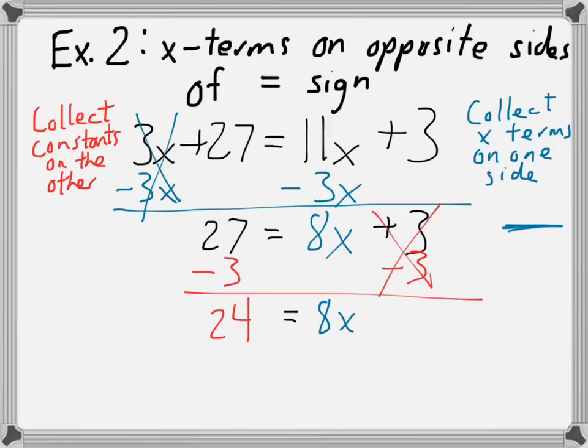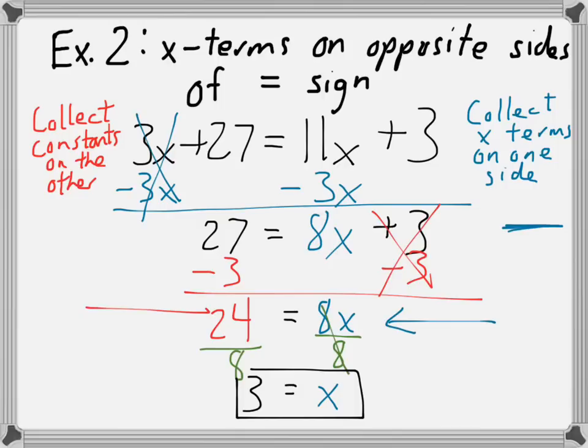So, now to get x by itself, I need to undo the multiplication. To undo multiplying by 8, I need to divide by 8. That would give me only x on the right side of the equation. 24 divided by 8 is 3. So, now we have the value of x for that example. Notice that in this step right here, all of our x terms were on the right side and all my numbers were on the left side. Let's look at another.